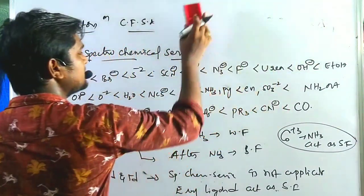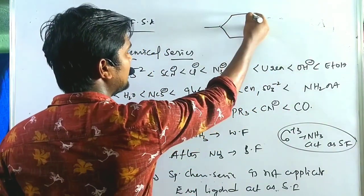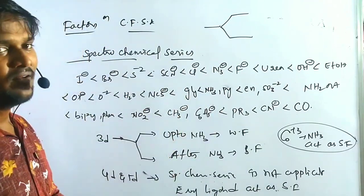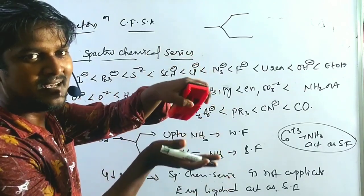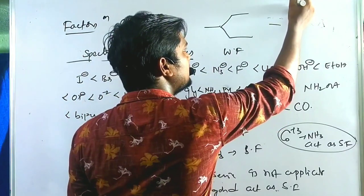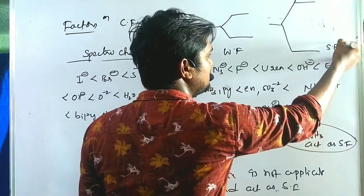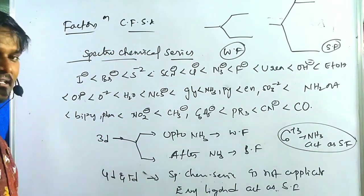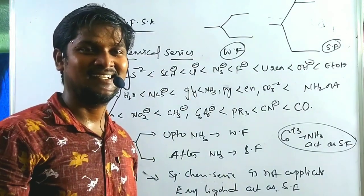In summary, a weak field ligand is one where the crystal field splitting energy produced when the ligand approaches the metal cation is relatively small. A strong field ligand produces a much larger splitting energy. These are the five factors which affect the crystal field splitting energy. Thank you for watching.